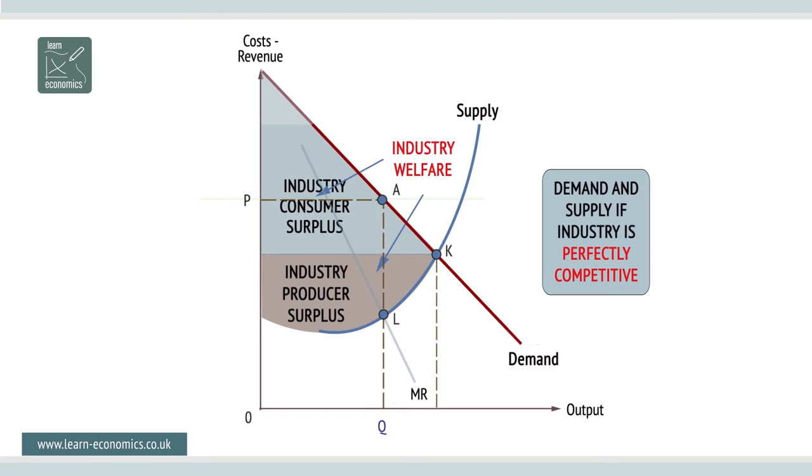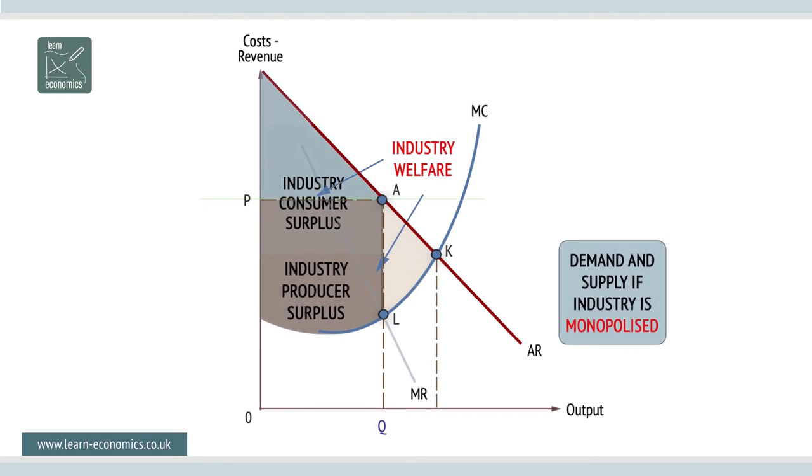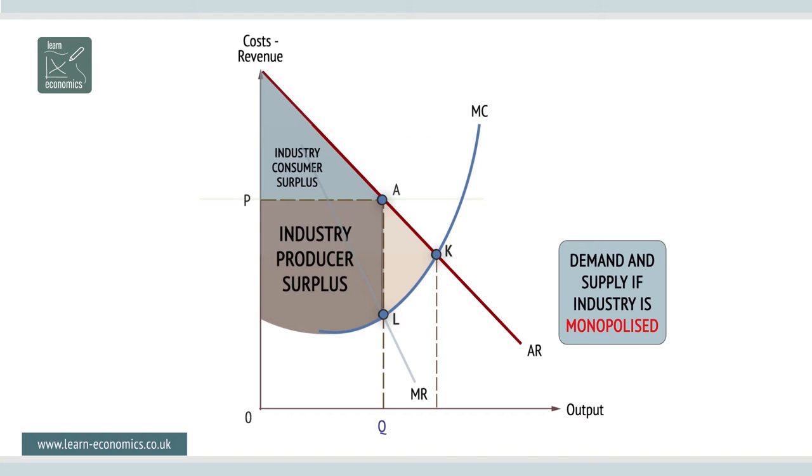But if monopolized, demand becomes the average revenue curve and supply becomes the marginal cost curve. Consumer surplus shrinks while producer surplus grows. There is a loss of consumer surplus and a net gain in producer surplus, but it is important to note that there is an overall or net welfare loss of area A, K, L.